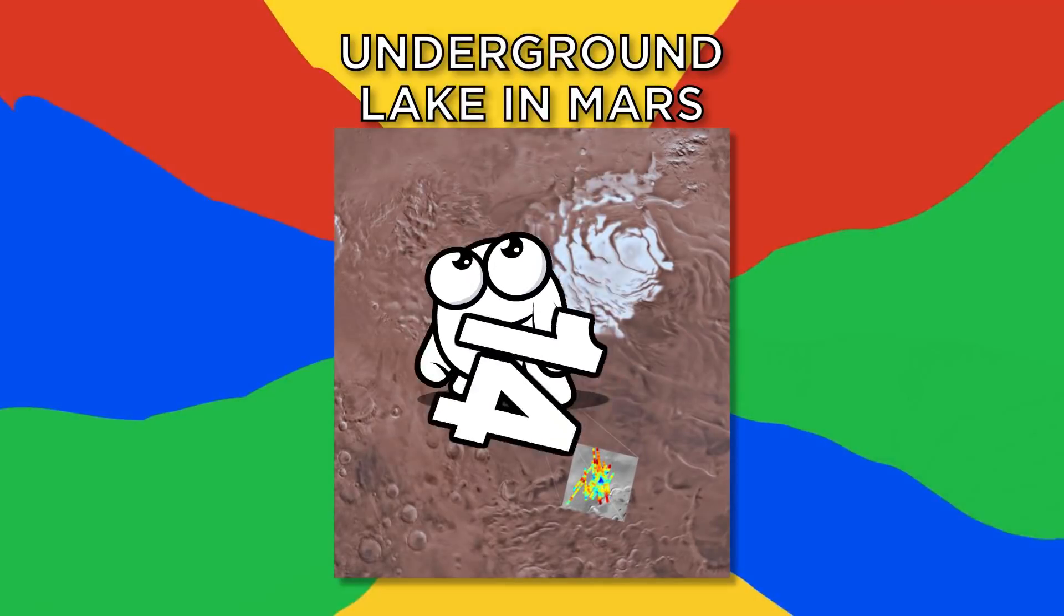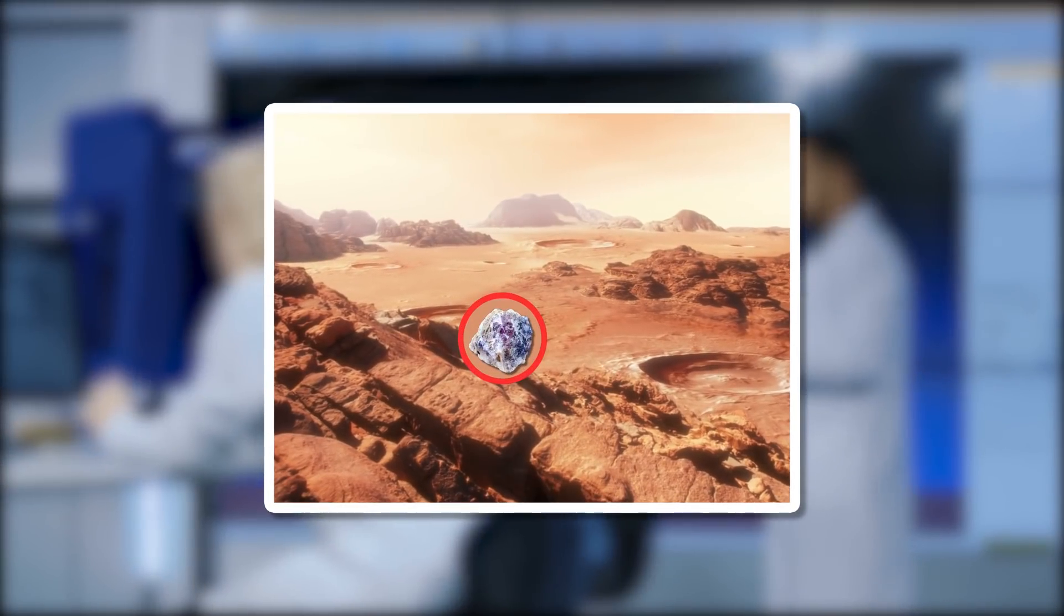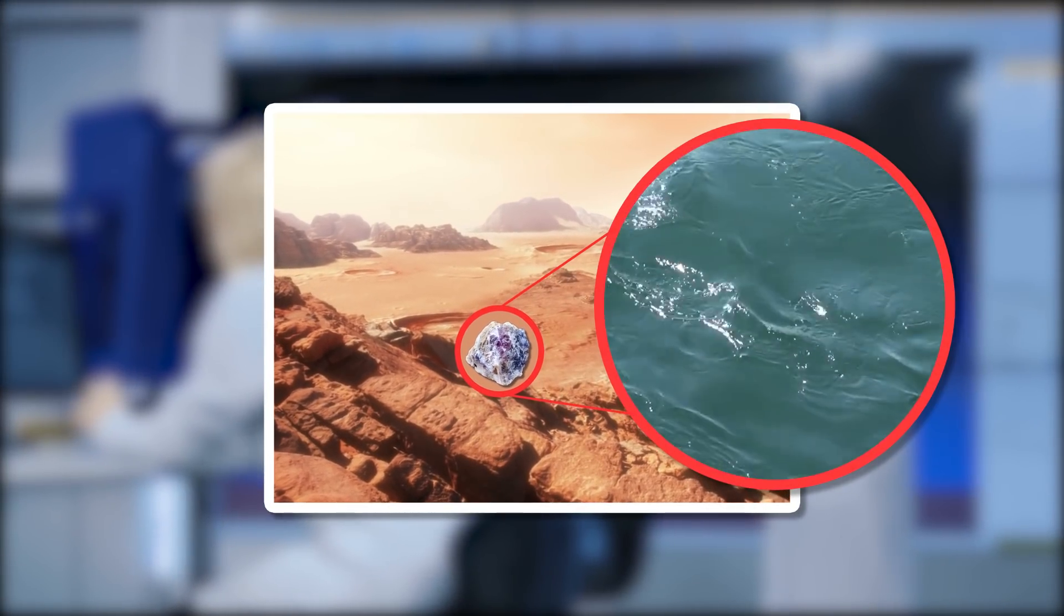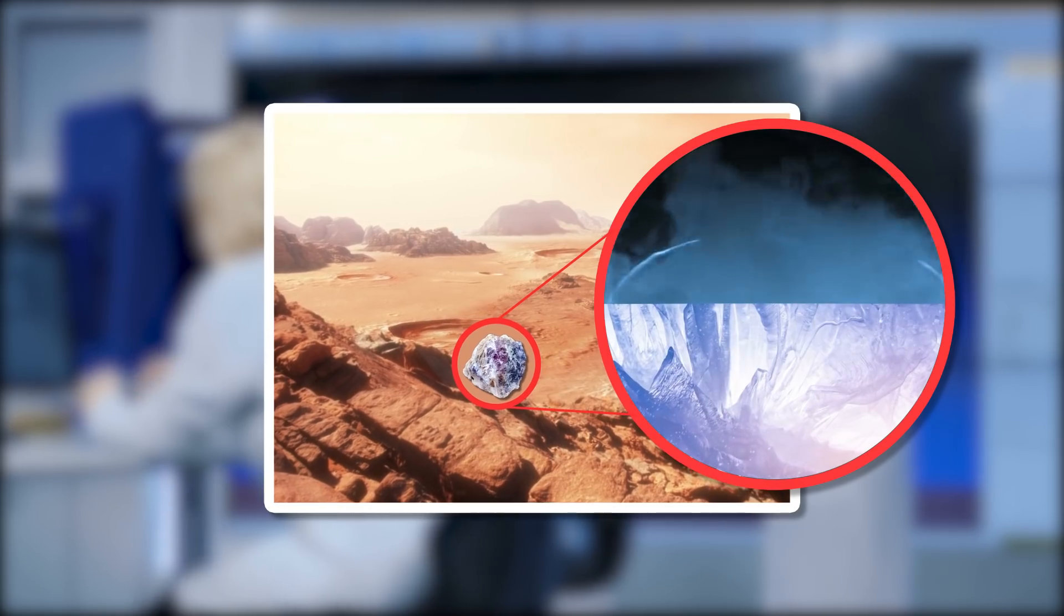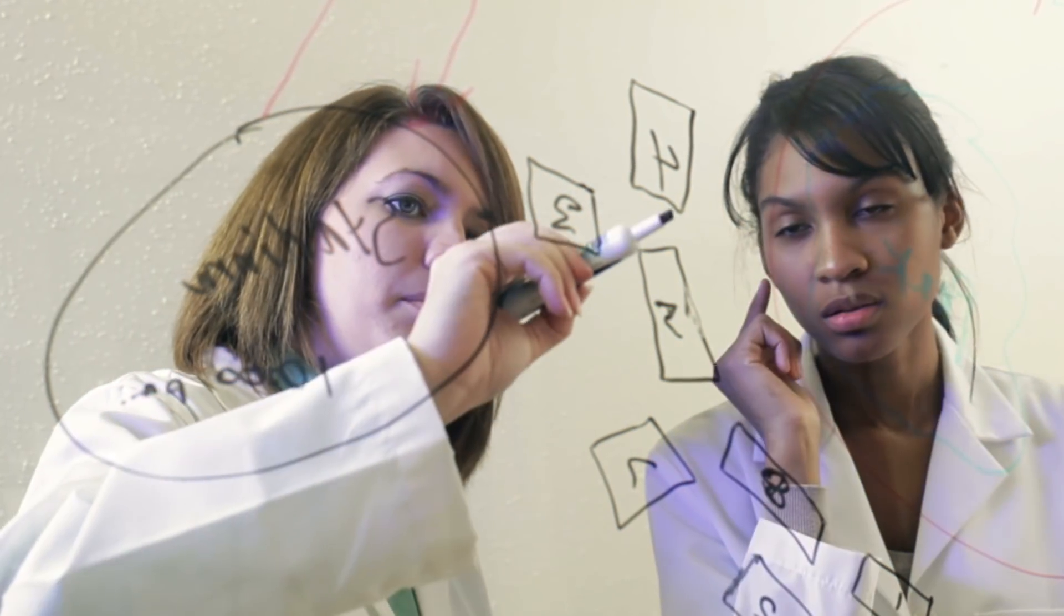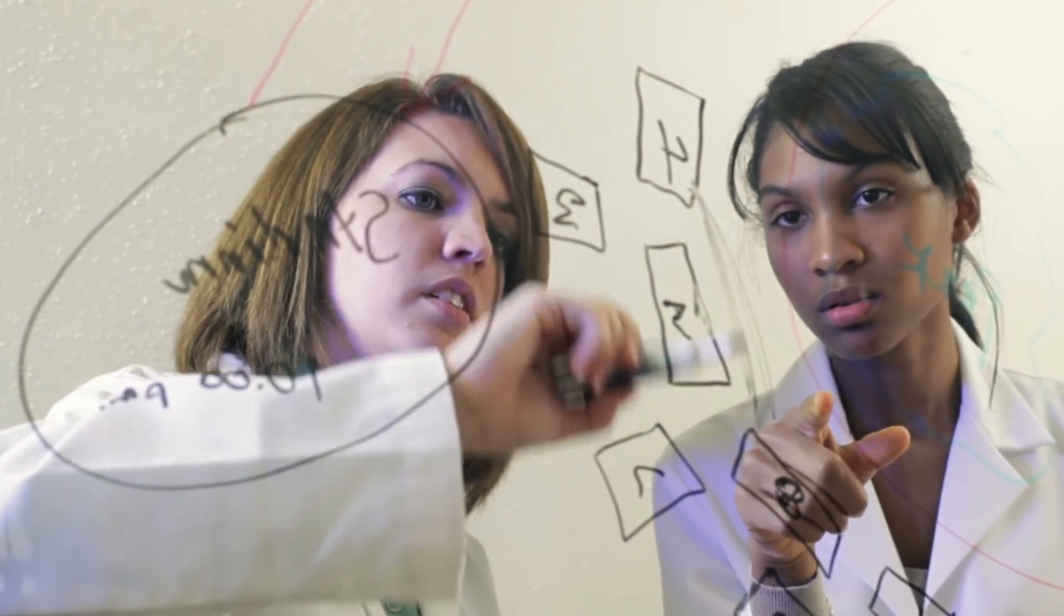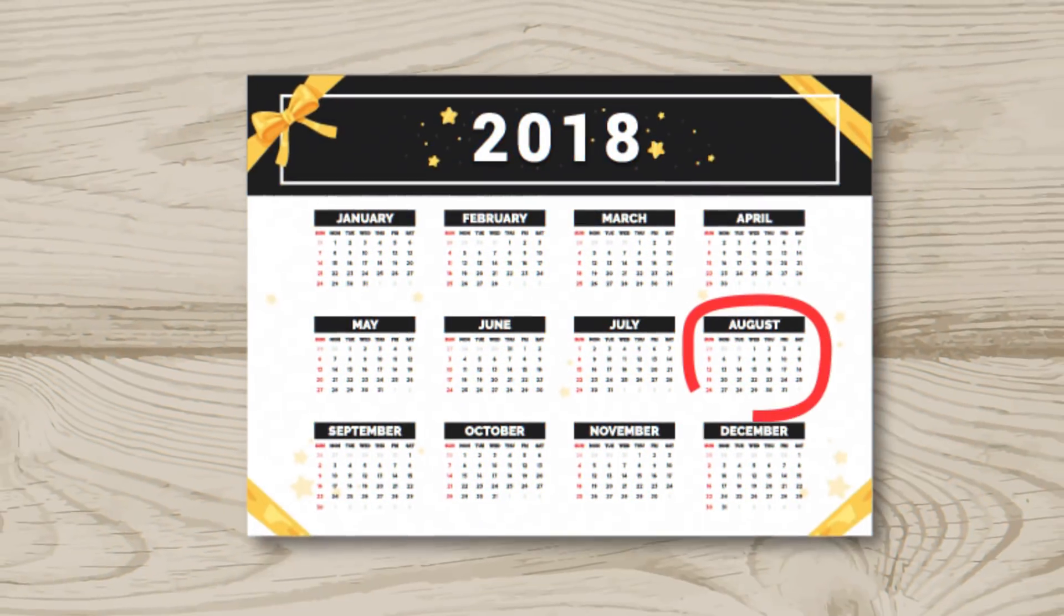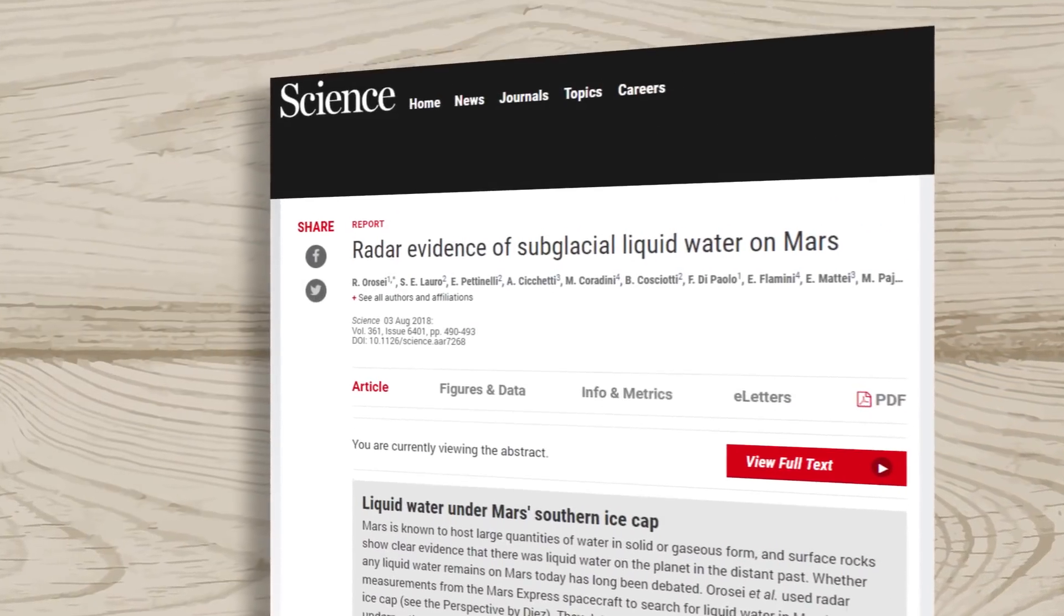Number 14, Underground Lake in Mars. Using rock samples, scientists have found out that water does exist on Mars, but only in the form of ice and water vapor. However, there was little evidence suggesting it existed in the present time. That changed in August 2018, when a study in Science came out.